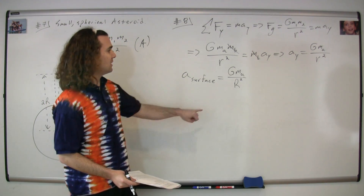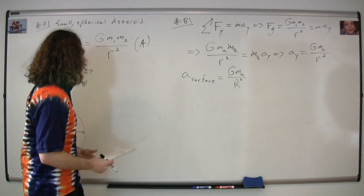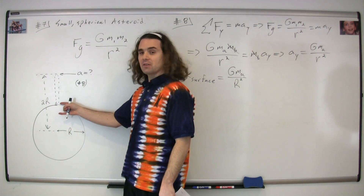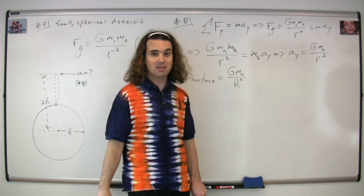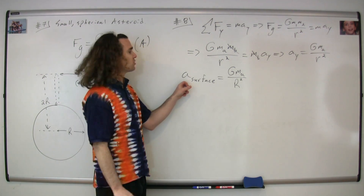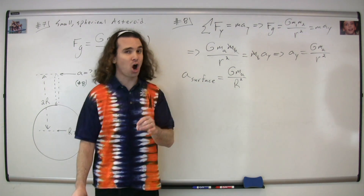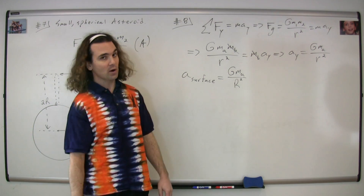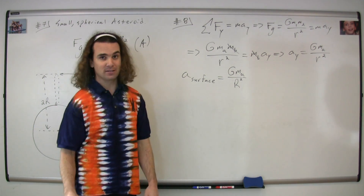Therefore, we simply substitute in the radius of the asteroid, because the distance between the surface of the asteroid and the center of mass of the asteroid would be the value of r. Therefore, the acceleration on the surface of the asteroid is big G times the mass of the asteroid divided by r, the radius of the asteroid, squared.